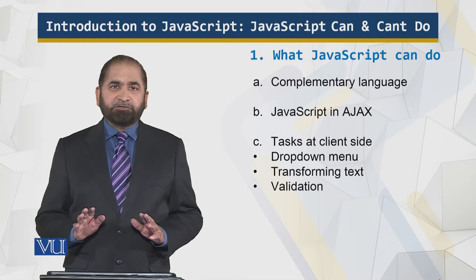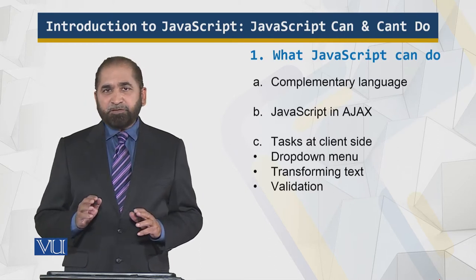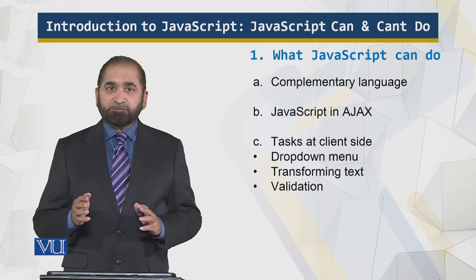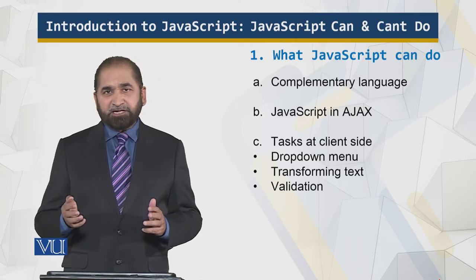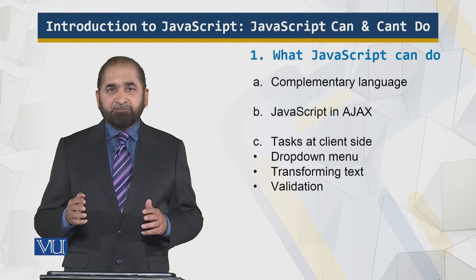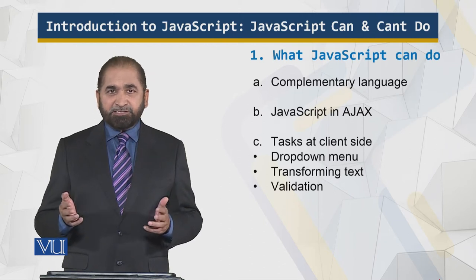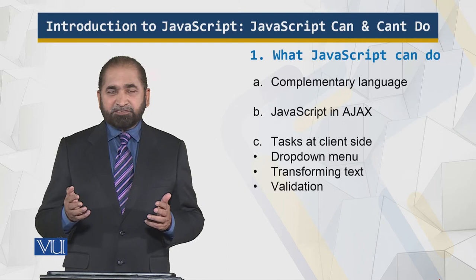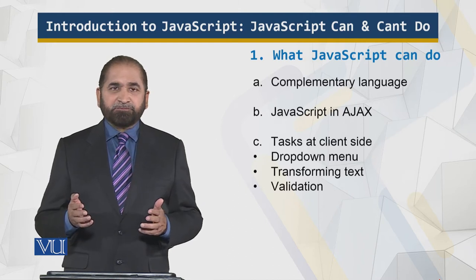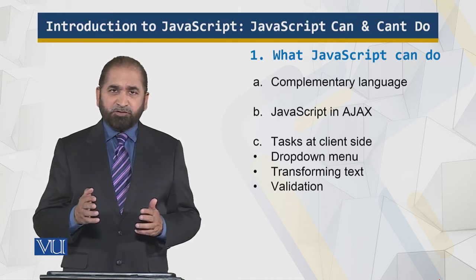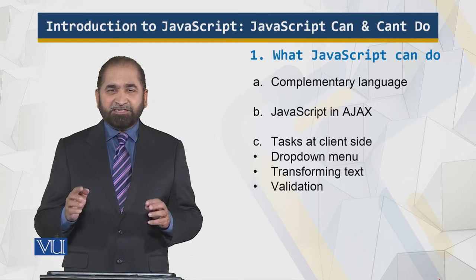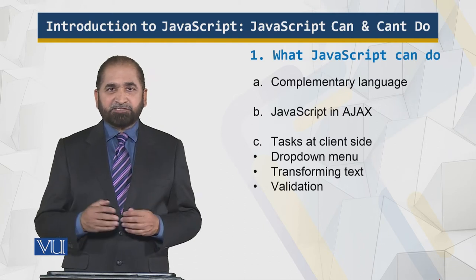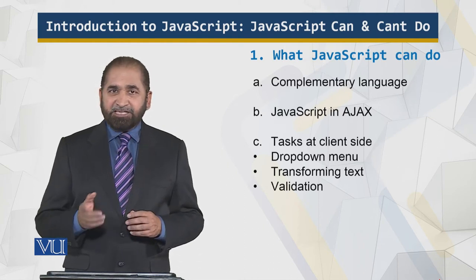JavaScript is a complementary language. Complementary language means that it is a supporting language — it is not a major language in the sense that you cannot develop entire application systems or complex systems using JavaScript. JavaScript supports what you are doing; it complements it, but it is not something on which you can build mega systems entirely on its own.